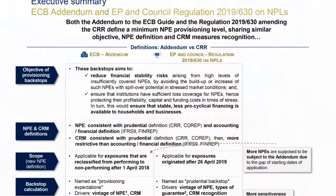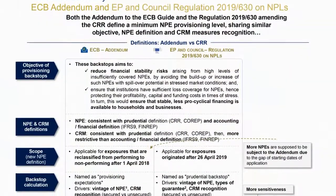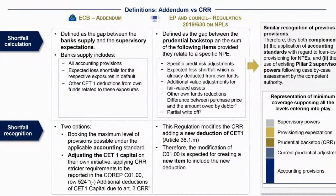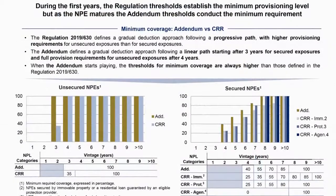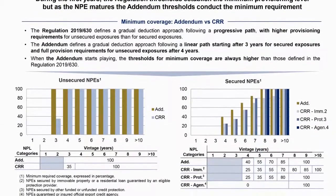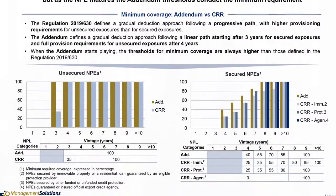Finally, Regulation 2019-630 amending the CRR as regards minimum loss coverage for NPEs introduces aspects regarding the definition of NPEs and forbearance measures, establishes a minimum coverage requirement for NPEs, and a deduction of CET-1 coverage shortfall, if relevant.